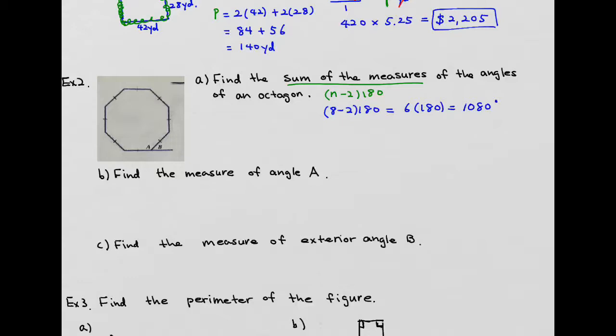So then the second question is asking, find the measurement of angle A. So the measurement of angle A is right there. And we know that angle should be the same as all the other angles, all eight angles, right? This measurement should all be the same.